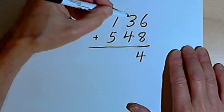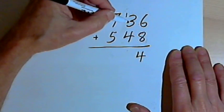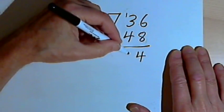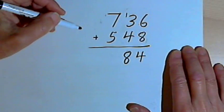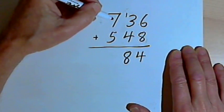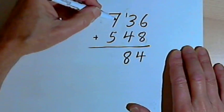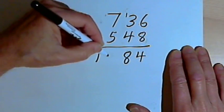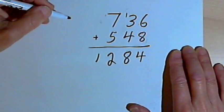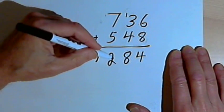Now adding up in the tens column, I've got a 1 plus 3 is 4, and 4 more will give me 8. And there's nothing to carry. Now I've just got to go to the hundreds column and add the 7 plus 5, which is 12. So I've got 1,284.